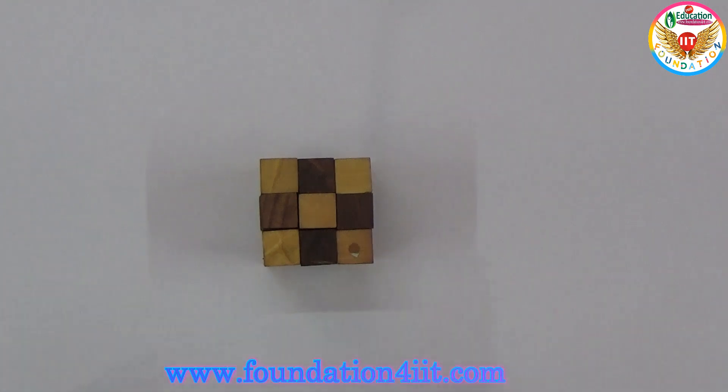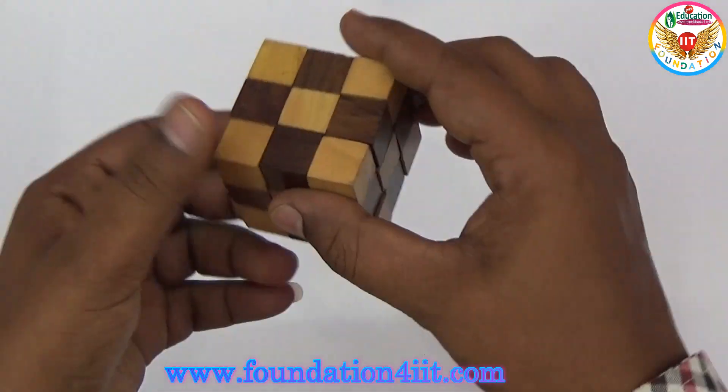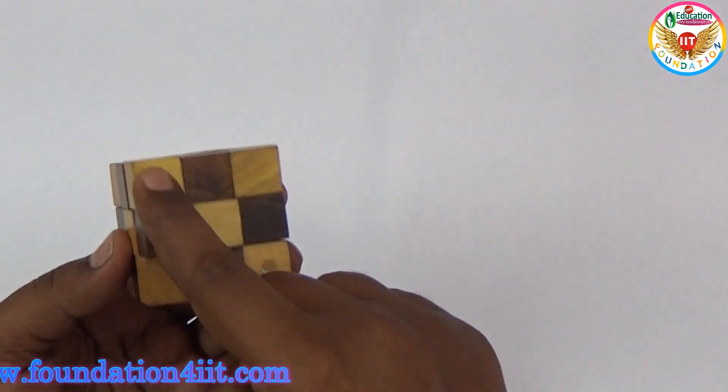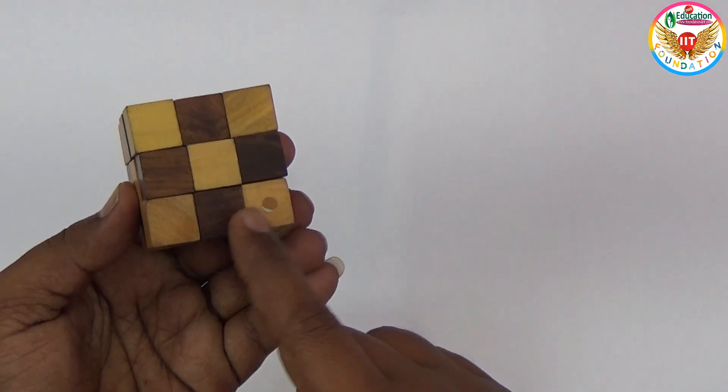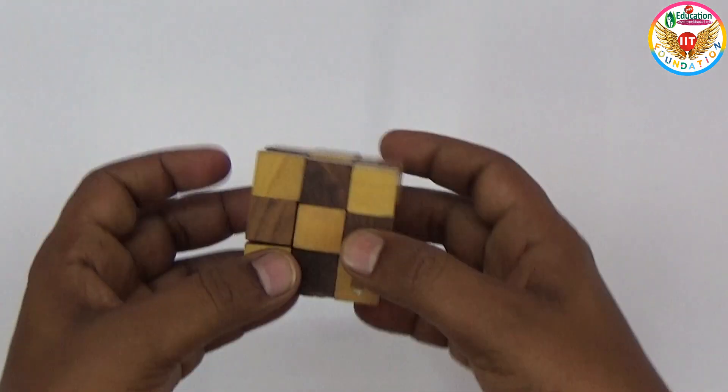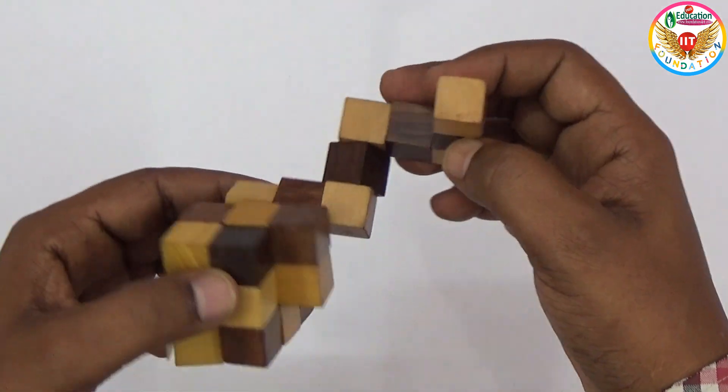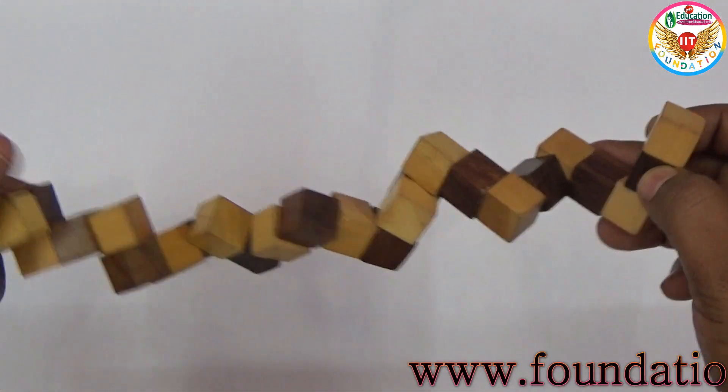Welcome to educational channel. In this video, I will show one of the snake cube puzzles. This is a cube - 1, 2, 3, 4, 5, 6, 7, 8, 9, and 9 into 3, so total 27 cubes form a single cube. This can all be taken apart into separate pieces. You can rotate and remove all of these.